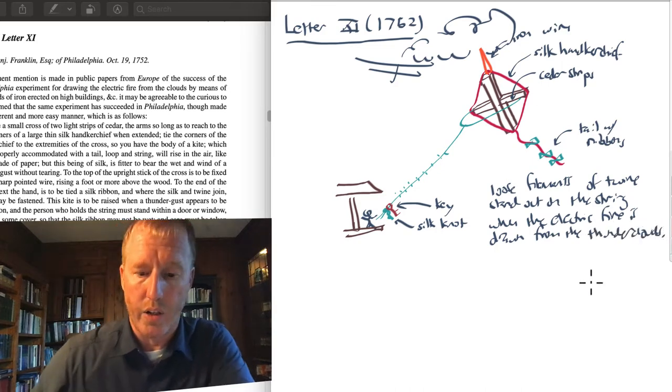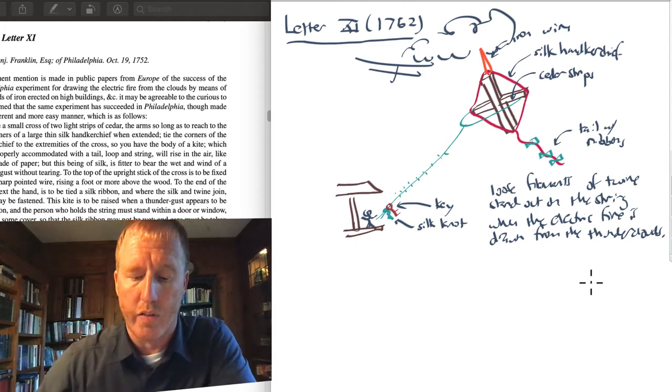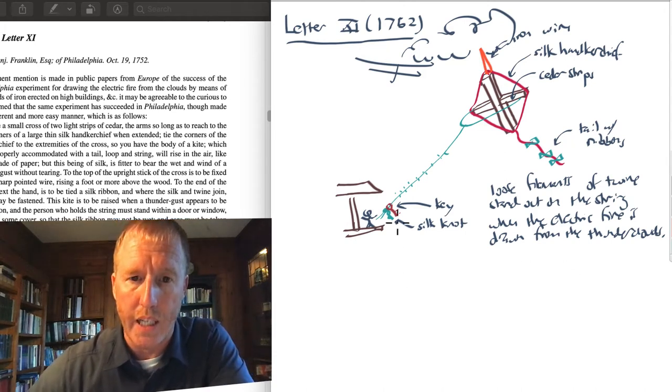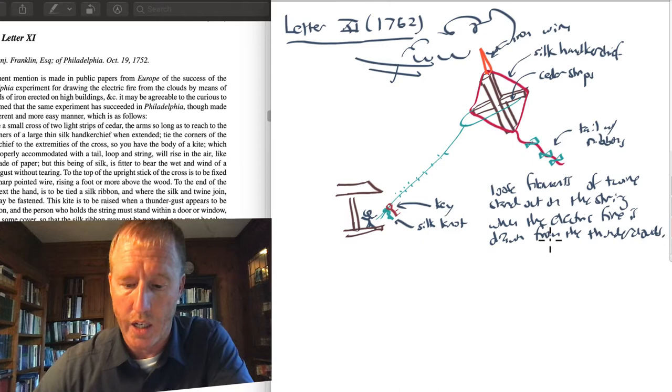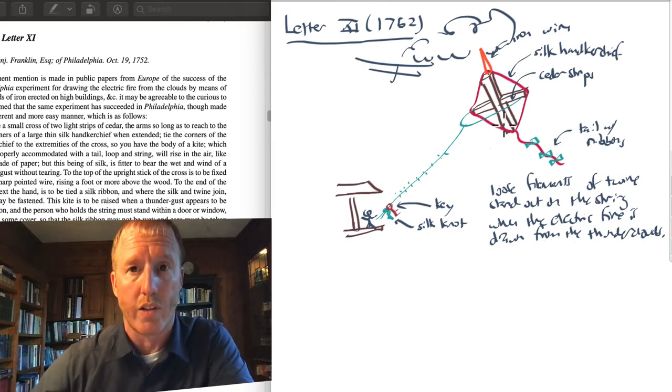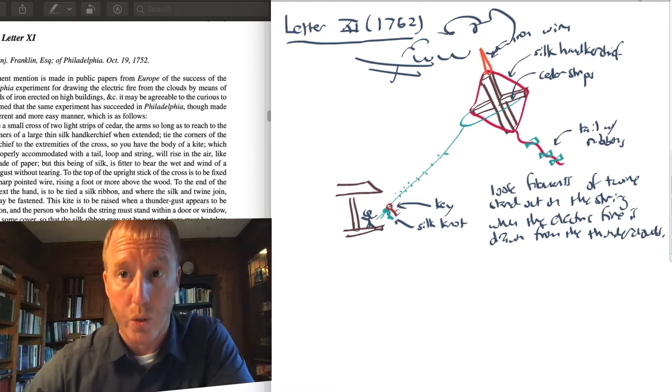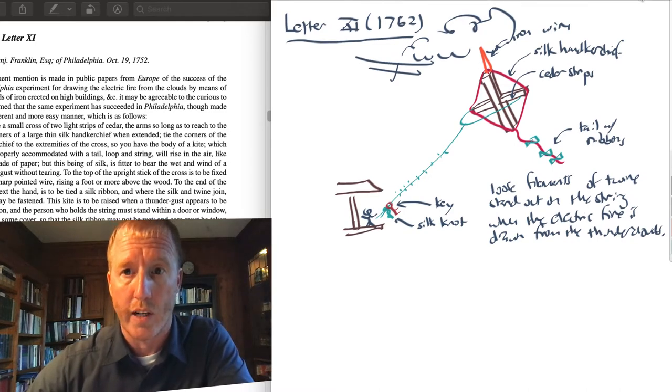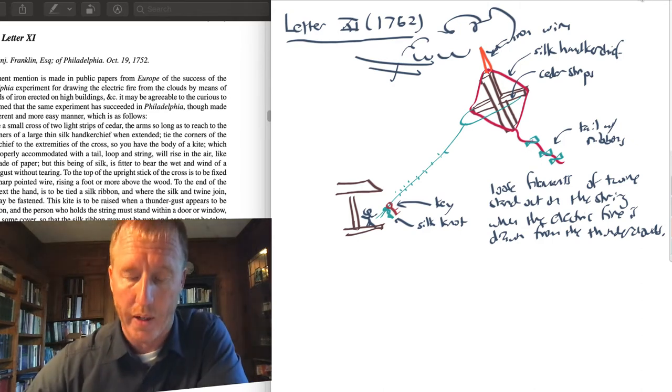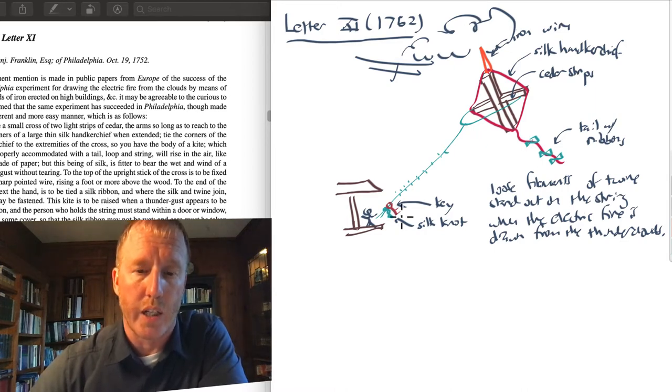He goes on in this letter to explain how this stream of electric fire may be drawn from the key by putting your knuckle right by the key, and you get a constant stream of sparks going from the key into your finger. As you might imagine, this is probably pretty dangerous, because if there's a sudden stroke of lightning, it would go through there and down the string to you and perhaps electrocute you. And some subsequent experimenters who tried to reproduce what Franklin did, did in fact get electrocuted and die. There are some stories of this happening. Franklin, of course, didn't get electrocuted. He used his knuckle. He drew fire out of where the key is. He also held a Leyden bottle here to store the charge.